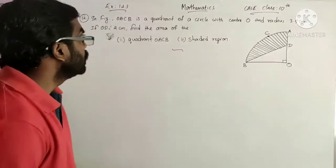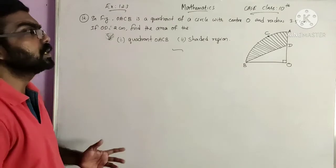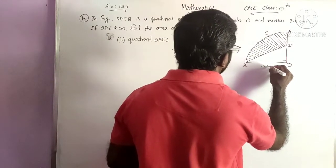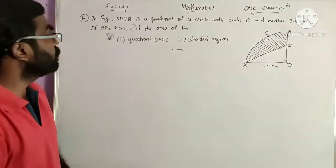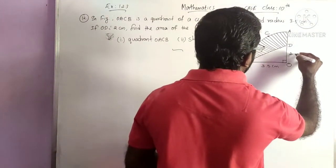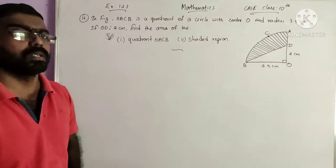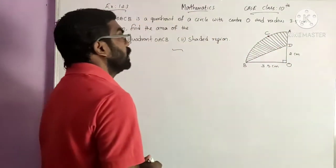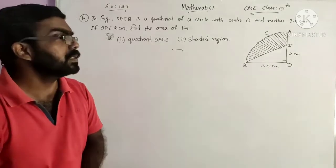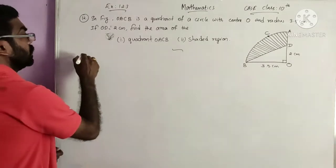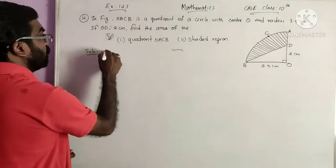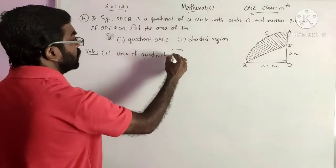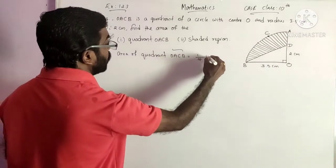We move on to question number 12. In the figure, OACB is a quadrant of a circle with center O and radius 3.5 cm. OB is the radius at 3.5 cm and OD is equal to 2 cm. Find the area of first the quadrant OACB, then the area of the shaded region — that means area of quadrant minus area of triangle. First we find the area of quadrant OACB, which equals 1 by 4 pi r square.